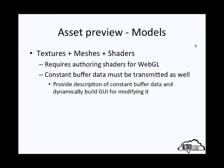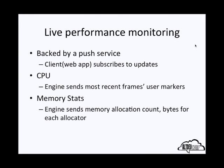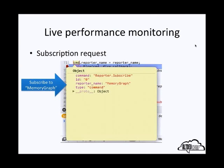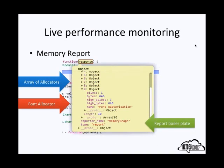For live performance monitoring, I've chosen to back it by a push service. The client web application subscribes to updates and sets an interval as to when it wants to be updated. For CPU performance monitoring, my engine sends the most recent frame's user markers. For memory stats, the engine sends memory allocation count and bytes for all registered allocators. Here's a screenshot from the Chrome browser's debugger showing a subscription request. The command is reporter.subscribe, and the reporter name is memory graph. The engine replies back with an array of allocators — I've expanded the font allocator, showing the number of allocations, the bytes allocated, and the high watermarks for both stats.